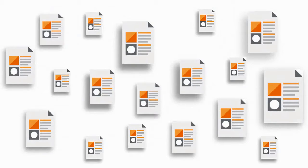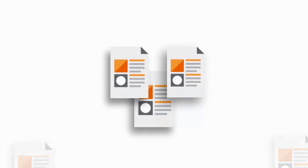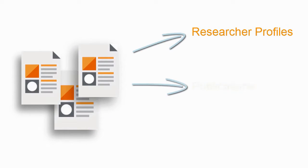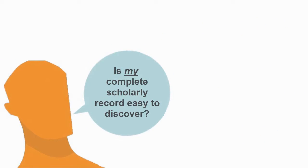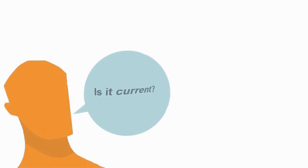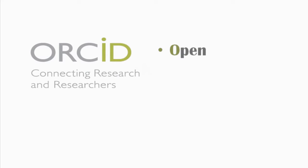Is distinguishing your research activities from the work of others a familiar challenge? Or do you find managing multiple research activities across information systems frustrating? It's important that your complete scholarly record is easy to discover and kept current, both for your own needs and for others wanting to review, evaluate, and follow your work. ORCID.org offers one way to help solve these challenges.